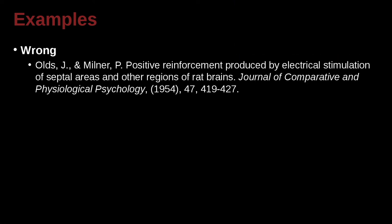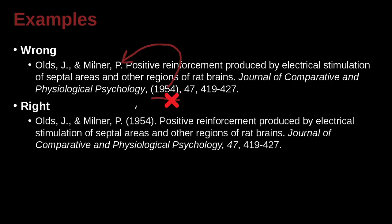Let's take a look at another one. Old J and Milner P — positive reinforcement. Right away we see there's a problem: we've got the year way down at the end, when we know that the year should be up after the authors. So the correct way to write that would be the year in parentheses after the authors. Also pay attention — we've got that ampersand there. Remember the ampersand.